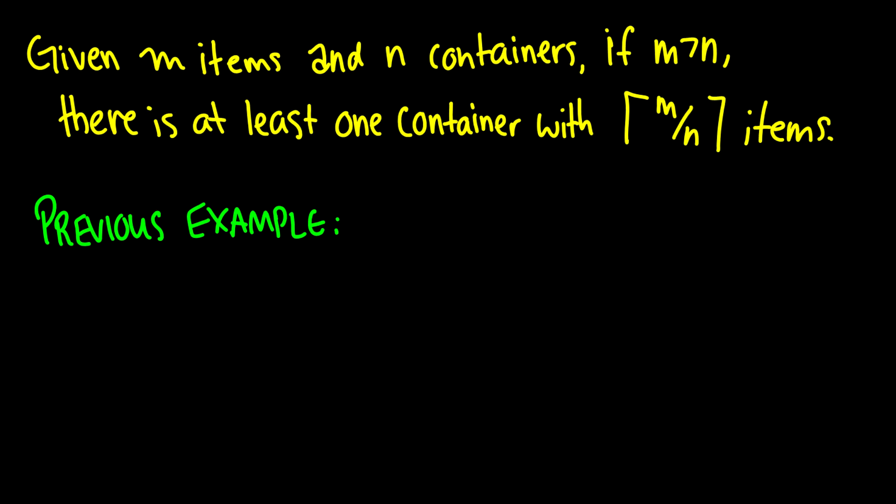We say that if we have m items and we have n containers, if it's the case that the number of items is greater than the number of containers, there's at least one container with the ceiling of m over n items. And I should mention that the ceiling of m over n, what it does is if you have a number x point sum values y, z, w, so on and so forth, what it does is it outputs x plus 1. So it just rounds the number up.